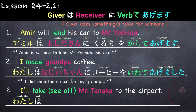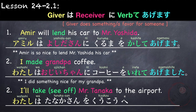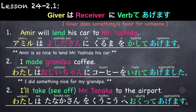Next example: I will see Tanaka-san off to the airport. Watashi wa, Tanaka-san wo, koukou e, okutte agemasu. We don't need to add Tanaka-san as the receiver separately because he is already the object of the verb okutte, so it would be redundant.